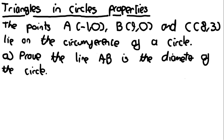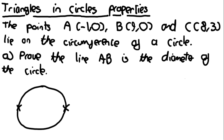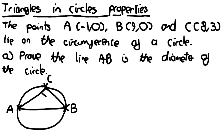If a diagram isn't provided I would always draw a quick one to see what's going on. It says that line AB is the diameter, so let's say A is about here, B is about here, and C is up here. We need to prove that line AB is the diameter, and we do this by proving that angle ACB is equal to 90 degrees.